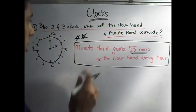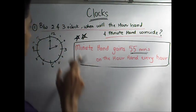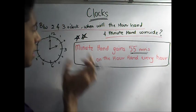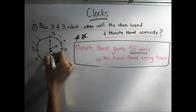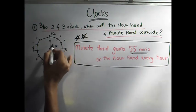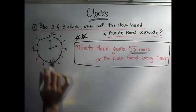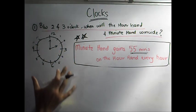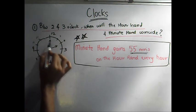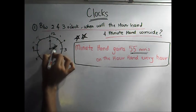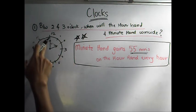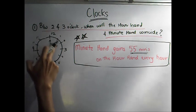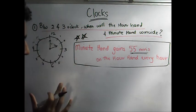Here's how you start. They've asked you between 2 o'clock and 3 o'clock, so start with 2 o'clock. At 2 o'clock, the hour hand will be at 2 and the minute hand will be at 12. Now, what is the difference between the hands right now? It is 10 minutes. For the minute hand to coincide with the hour hand, it needs to gain 10 minutes.